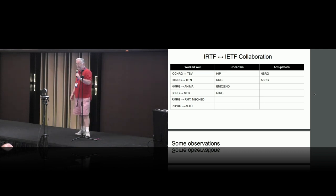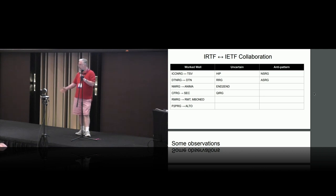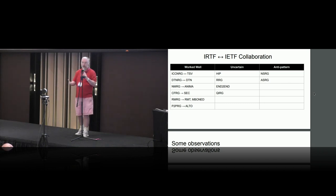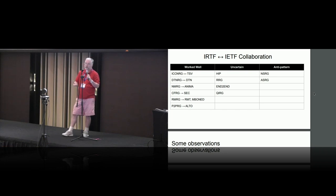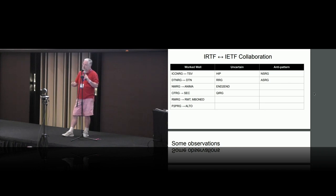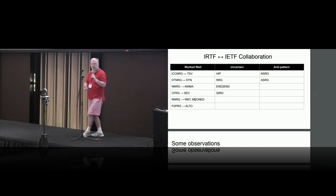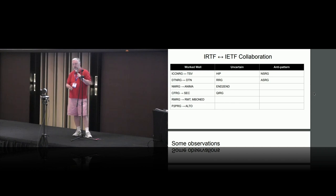Network management research group: proposals that went through there became part of the Anima working group in the IETF. CFRG brings together folks from the crypto community who aren't naturally IETF participants — they evaluate cryptographic proposals and make recommendations that the IETF can use. The way the security area works is there's a deference to CFRG to give a thumbs up or thumbs down on crypto proposals — bringing in expertise that isn't really present in the IETF but that the IETF relies on.